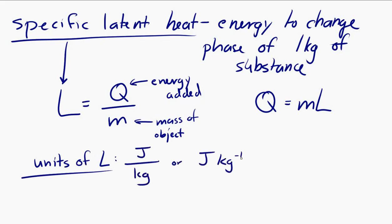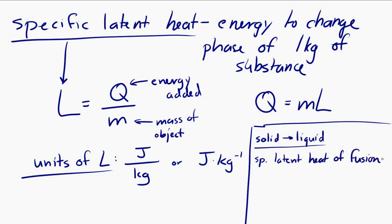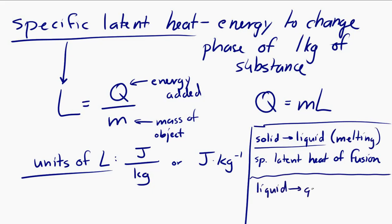Specific latent heat refers to a phase change, and since there are different phase changes, there are different specific latent heats. For example, there is the specific latent heat of fusion, which refers to the phase change from solid to liquid — also known as melting. And the specific latent heat of vaporization refers to the phase change from liquid to gas, which is also called boiling.